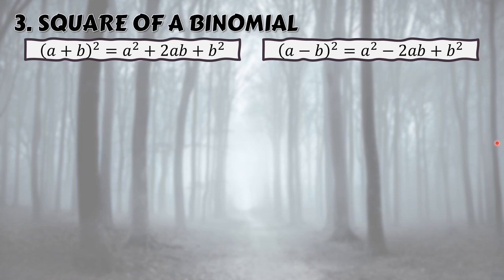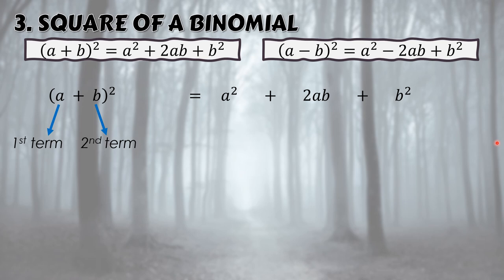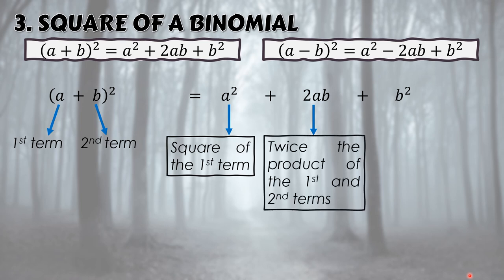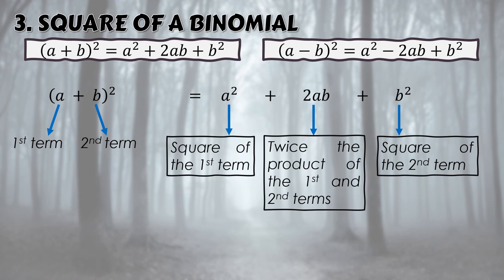In the formula for squaring a binomial: a squared is the square of the first term (a times a); 2ab is twice the product of the first and second terms (multiply a and b, then multiply by 2); and b squared is the square of the second term. The 2 is always a fixed multiplier.